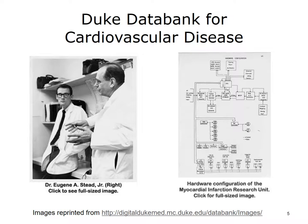The Duke Data Bank for Cardiovascular Disease ultimately became a major part of a cycle of care improvement that started with identifying problems from aggregate data, testing ideas for improvement including in clinical trials, incorporating that new knowledge into the medical literature, and eventually into new care guidelines — adherence to which could then be measured through the Data Bank.